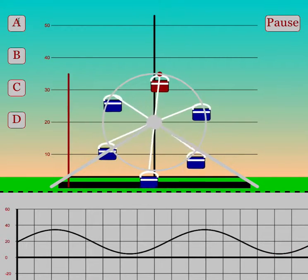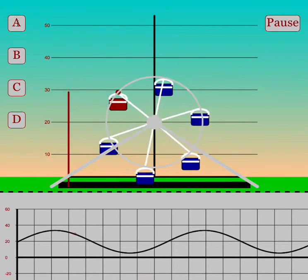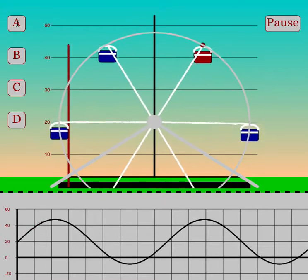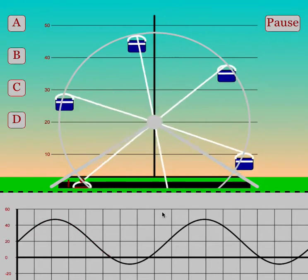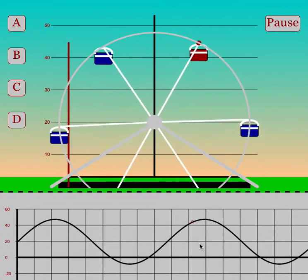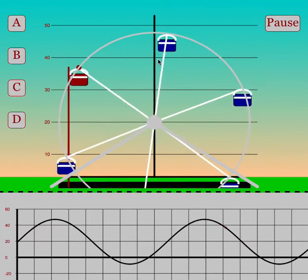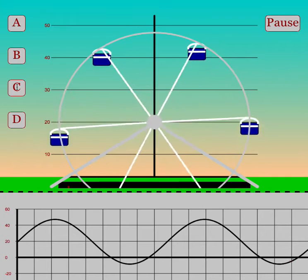Students can change the A value, which will represent the amplitude of the sine curve and the radius of the Ferris wheel. A bigger radius Ferris wheel will cause a more drastic rise and fall of the Ferris wheel. The amplitude of the sine curve corresponds to the radius of the Ferris wheel.